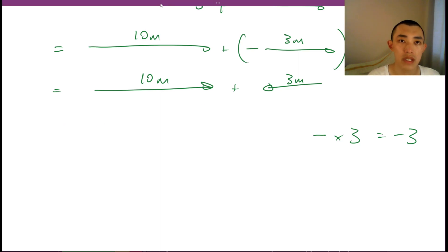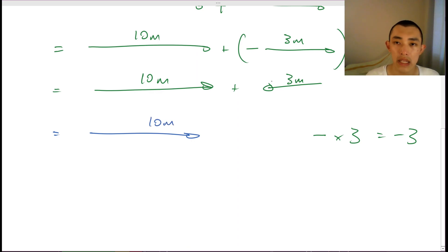And now we can do the same head-to-tail stuff that we did before. So we can have 10 meters this way. And I'll have the same 3 meters, again, matching the base or the tail to the tip. So I can see here that will be my resultant. And just by looking at that, I can tell it's 7 meters. And that's how we do vector subtraction.